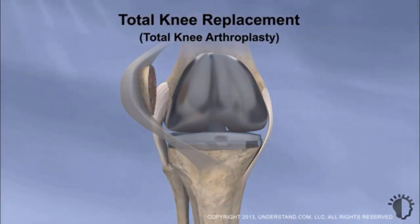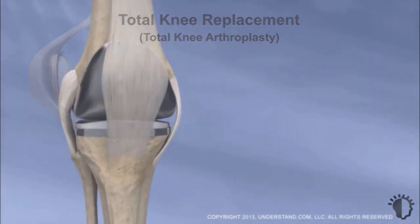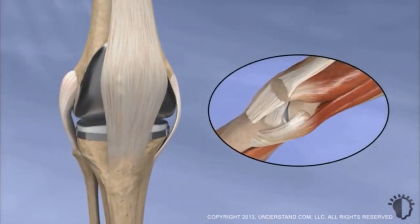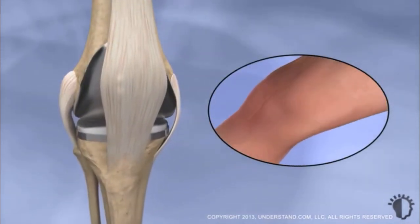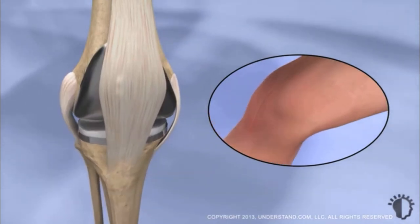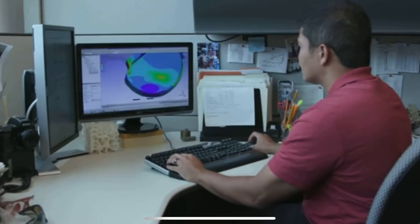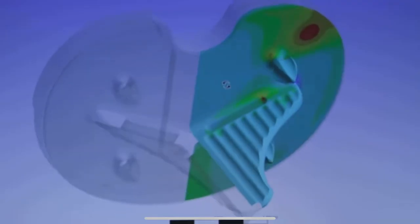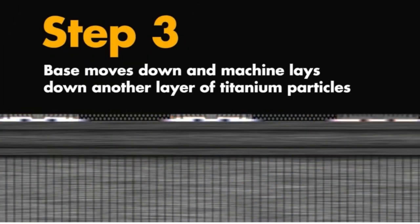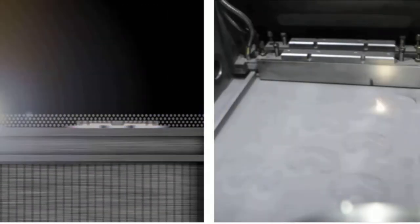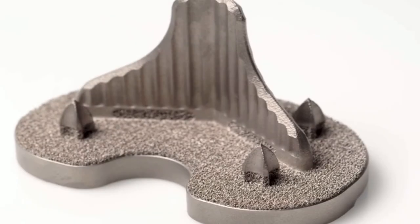Traditional knee replacement surgery involves flattening the bone around the knee and inserting replacement tibial and femoral components, as well as a PCU spacer. In the early 2000s, companies started exploring the potential for 3D printing in knee arthroplasty, adding a manufacturing method where structures are designed using CAD software and fabricated layer by layer. This method offers unprecedented design freedom, as well as increased porosity for optimal cell attachment.